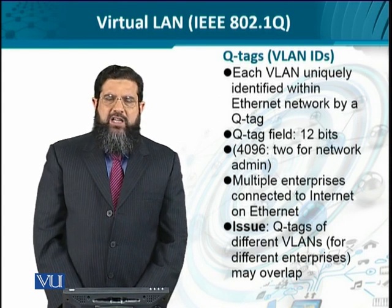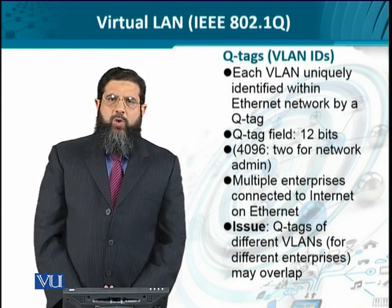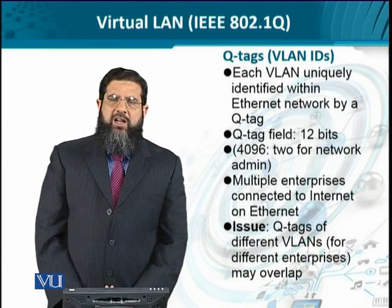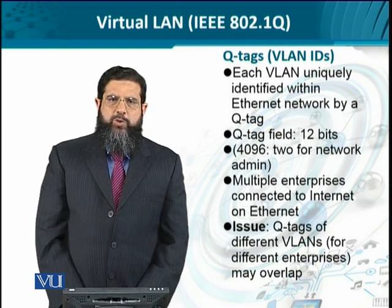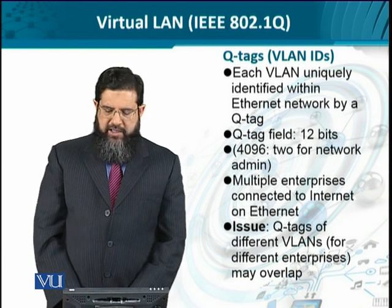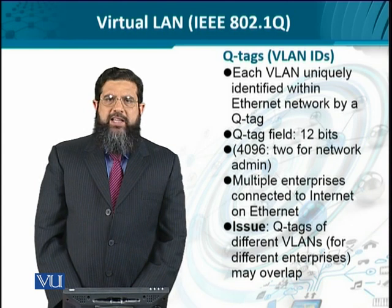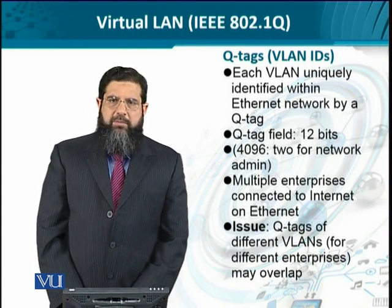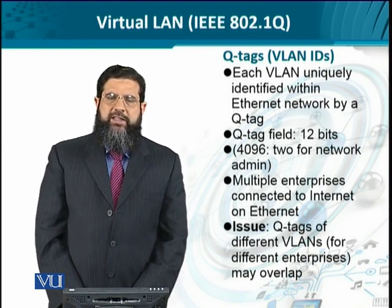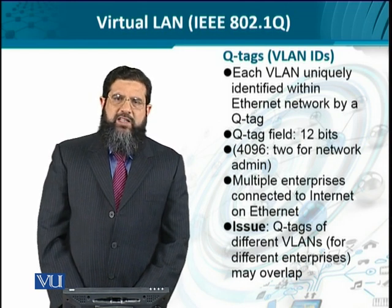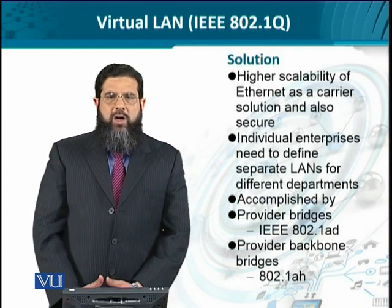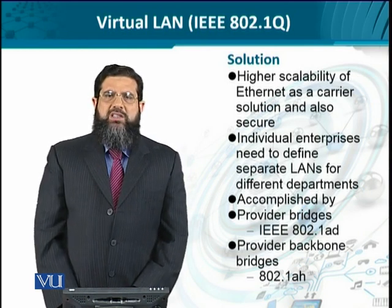Multiple enterprises can connect on the same switch by having their own VLAN IDs. If the switch is within one administrative domain managed by a single authority, there is no conflict. However, in the context of a Metro Ethernet network, the Q tags or VLAN IDs of different VLANs may overlap, because each administrative authority may independently assign VLAN IDs that end up being the same, causing conflicts and overlaps.